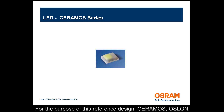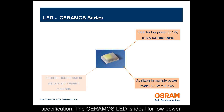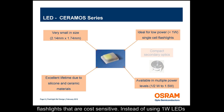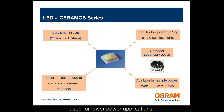For the purpose of this reference design, Ceramos, Oslon 80 degree, and Oslon 150 degree are considered based on the set specification. The Ceramos LED is ideal for low power flashlights that are cost sensitive. Instead of using one watt LEDs and under driving them for lower power flashlights, a half watt Ceramos which comes in the same package type can be used for lower power applications.